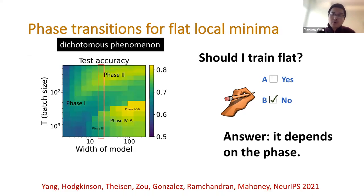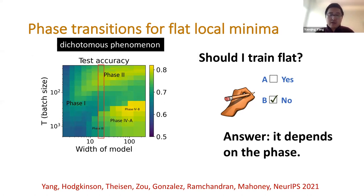Looking back, this is almost exactly the same as the flat versus sharp local minimum debate — should I train to a flat local minimum? It depends on the phase. If you are on the right side of the phase plot you should, but if you're on the left side then you should not. This is the dichotomous phenomenon again.